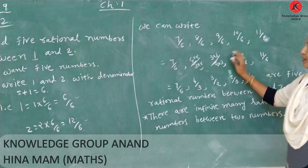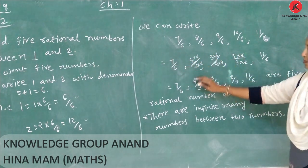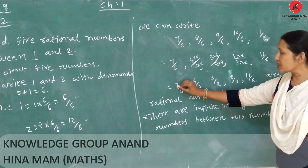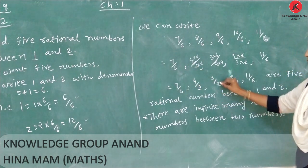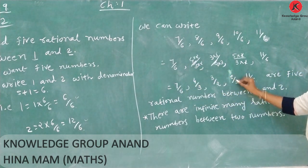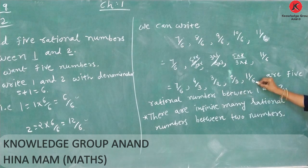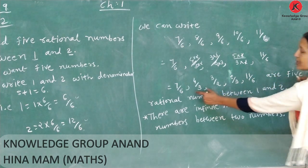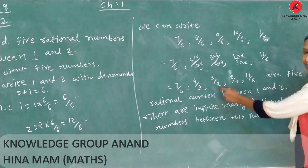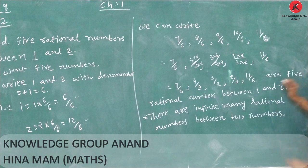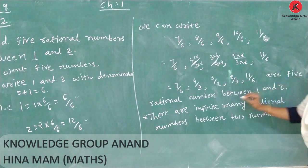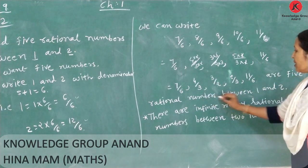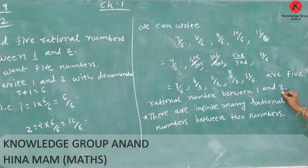We can simplify using prime factors: 7 by 6, 4 by 3, 3 by 2, 5 by 3, and 11 by 6 have a common factor of 1. These 5 numbers are rational numbers between 1 and 2.